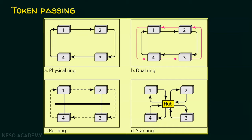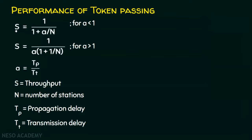Let's now see the performance of token passing. The throughput S of token passing is 1 / (1 + a/n) for a less than 1, where a = tp / tt — tp is the propagation delay and tt is the transmission delay. If a is greater than 1, then the throughput is equal to 1 / (a × (1 + 1/n)), where n is the number of stations involved in the token passing scheme.